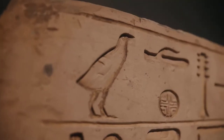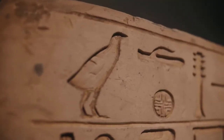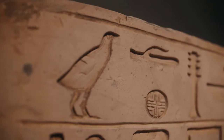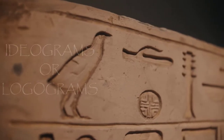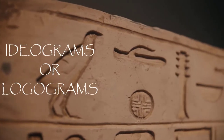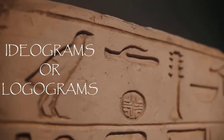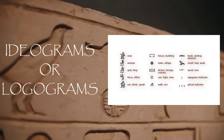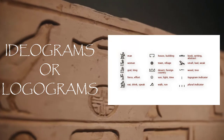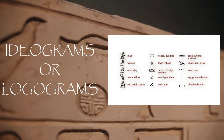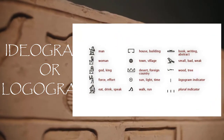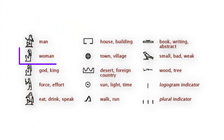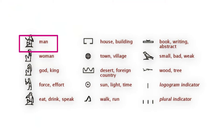In some cases, the symbol represents a full word. These symbols are called ideograms or logograms. You can see in the picture on the right how the symbol of the woman simply means the word 'woman.' The same with the man.